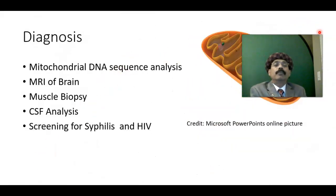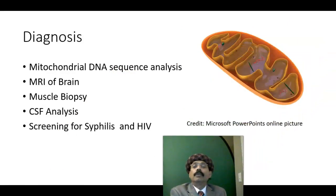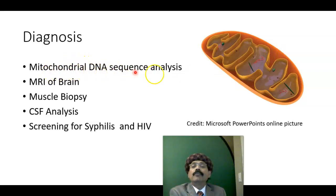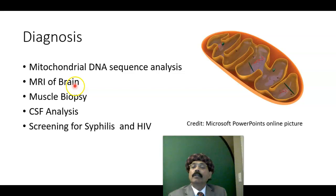How can we diagnose MELAS syndrome? Since it is a mitochondrial disease, we must perform mitochondrial DNA sequencing. We have DNA in the nucleus and DNA in the mitochondria; the problem here lies in the mitochondrial DNA. MRI of the brain and muscle biopsy are very important, as there may be myopathy associated with MELAS syndrome.